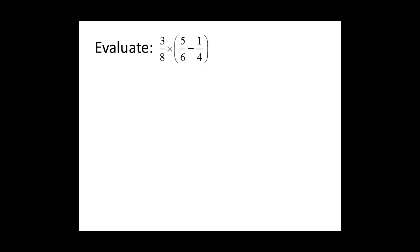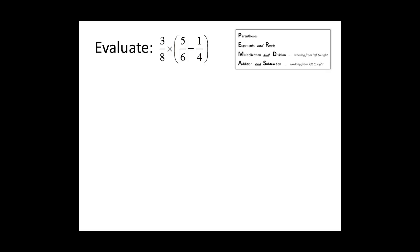Evaluate three-eighths times the quantity five-sixths minus one-fourth. We need to remember our order of operations. We will start with parentheses — we will subtract inside the parentheses as our first step. We are subtracting five-sixths minus one-fourth. We do not have a common denominator, and we need one because we are subtracting. The least common multiple of 6 and 4 is 12, so we need to write these fractions with a denominator of 12.